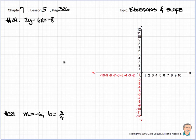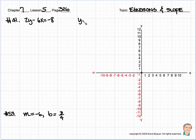Good morning. Chapter 7, Lesson 5 is on page 326. We're going to be talking about equations in slope. We're going to be using this famous equation that we'll be talking about through most of the rest of the year — the slope-intercept form of the equation, and it looks like y is equal to mx plus b.